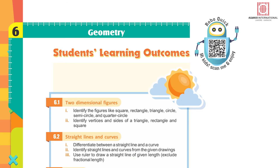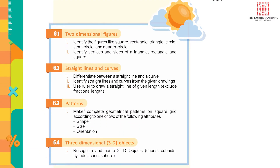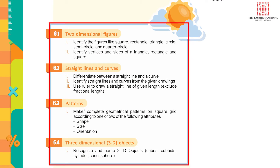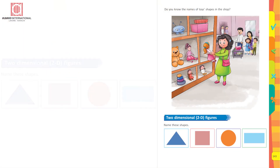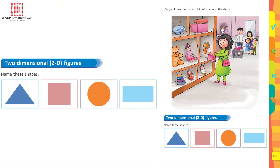Geometry students, learning outcomes: two-dimensional figures. Identify the figures like square, rectangle, triangle, circle, semicircle, and quarter circle. Identify vertices and sides of a triangle, rectangle, and square. Now, 2D figures — name these shapes.